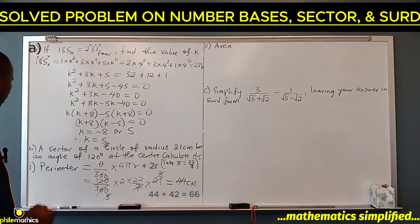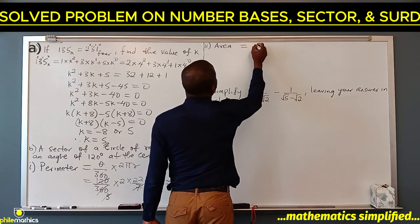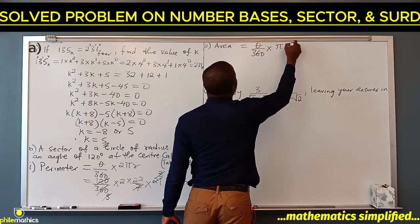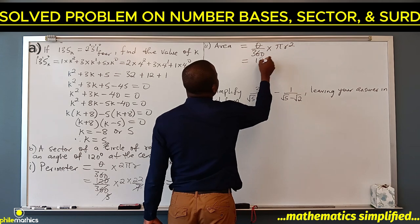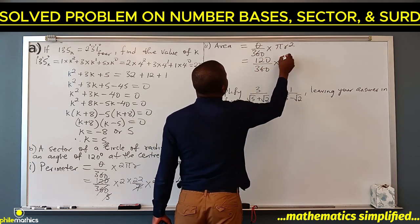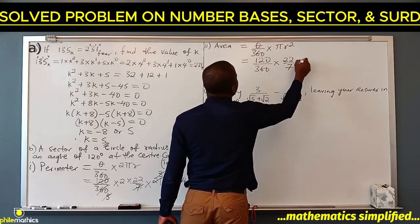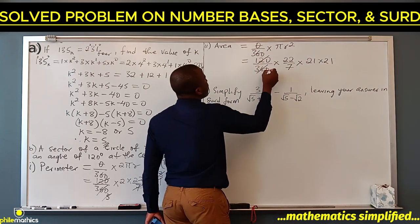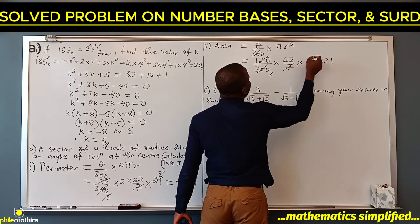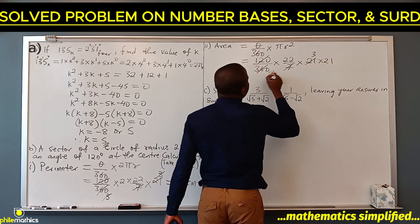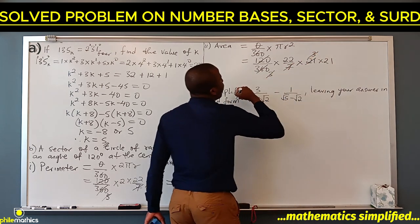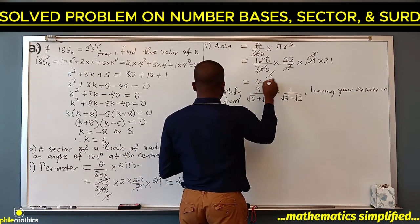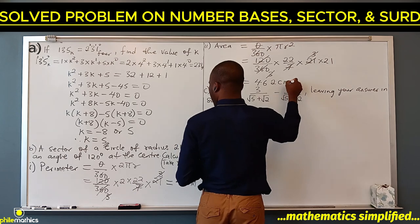Now for the area of the sector: the formula is theta over 360 times pi r squared. Theta is 120 degrees, so 120 over 360 times 22 over 7 times 21 times 21. 120 and 360 give one third; 3 and 21 cancel, leaving 22 times 21, which equals 462 centimeters squared.